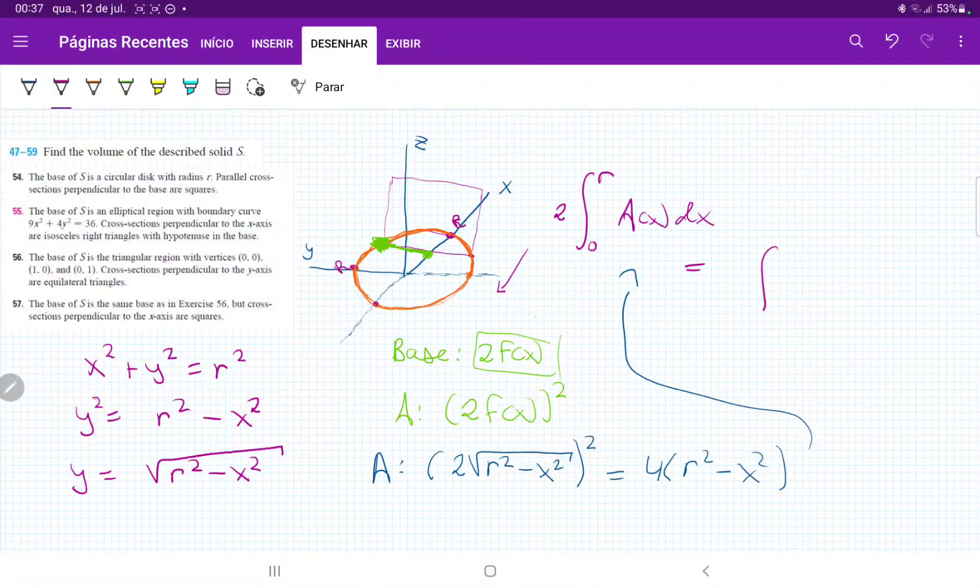This is the integral, and I'm just going to put the 4 outside because it's a constant, but it's times 2, so 4 times 2. So we have 8 times the integral from 0 to r of (r² - x²) dx.